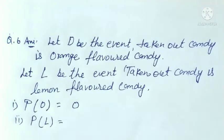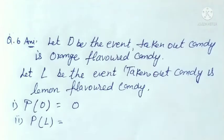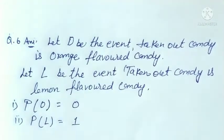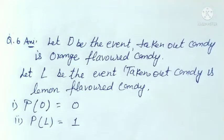Second part is probability of lemon flavored candy. Bag contains only lemon flavored candy — bag کے اندر صرف lemon flavored candy ہے۔ تو اس کے اندر سے ہم کوئی candy نکالیں گے تو وہ lemon flavored ہی آئے گی۔ اس کی probability کیا ہے؟ 100%، یعنی probability 1 ہو جائے گی، کیونکہ maximum probability 1 ہوتی ہے اور probability 0 سے لے کر 1 تک ہوتی ہے۔